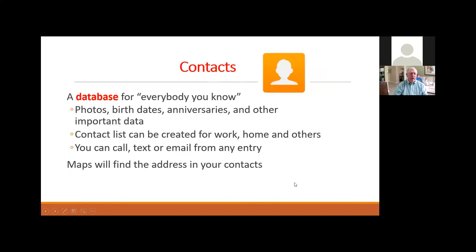Contacts — I love this database because you can put everything you know about people in there: photos, birth dates, anniversaries, and you can create special contact lists for work, home, and other activities. You can call, text, or email from any entry in the contact list. Maps will also find the address of your contacts — double-click an address in your contact list and the Maps app will show you a map to that address.